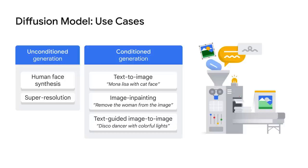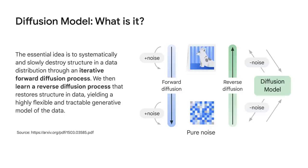Now, let's take a little bit of a deeper dive into diffusion models and talk about how these things actually work. As noted on the slide here, the essential idea is to systematically and slowly destroy structure in a data distribution through an iterative forward diffusion process. This is going to be adding noise iteratively to an image. We then learn a reverse diffusion process that restores structure in the data, yielding a highly flexible and tractable generative model of the data.